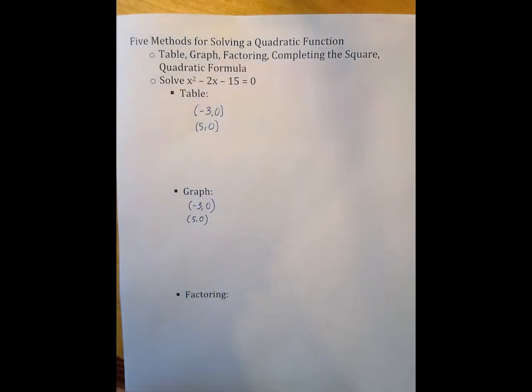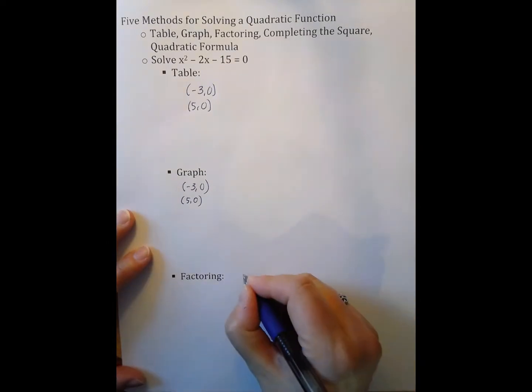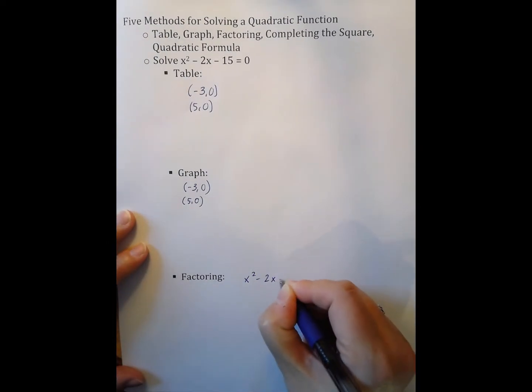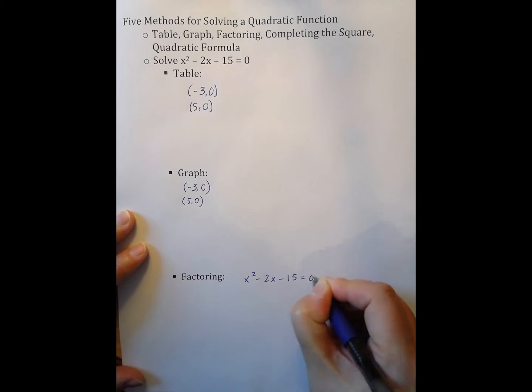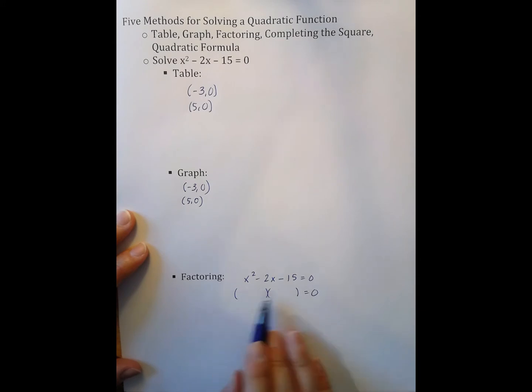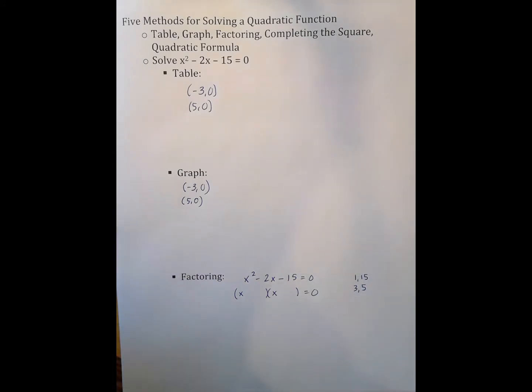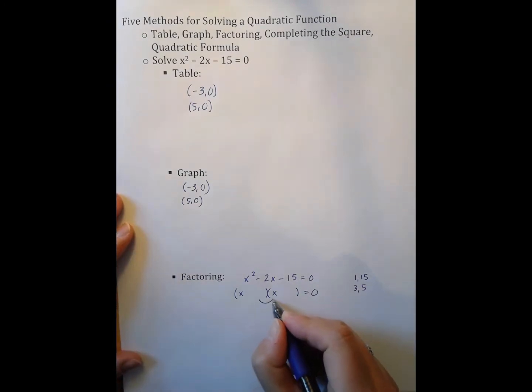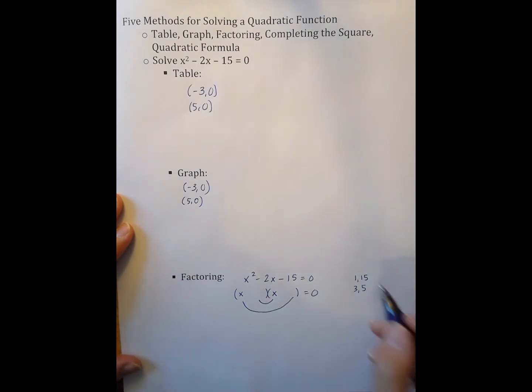The next method is factoring, and I can't use my calculator for that. So I have x squared minus 2x minus 15 equals 0. Again, you'll remember when we did this factoring, I'm looking for two numbers at the beginning of my parentheses that multiply to be x squared. That's going to be x and x. I'm then looking for two numbers that multiply to be negative 15. So that's 1, 15, 3, and 5, where one of them has to be negative.